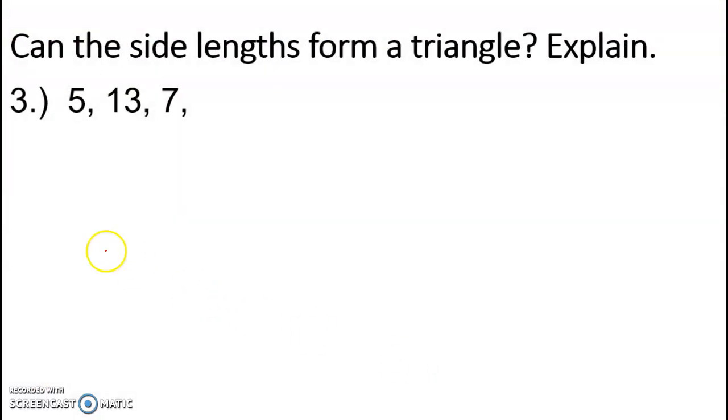Can the side lengths form a triangle? Explain. For this, we have to experiment it. Of course, we could test each one of them. We say 5 plus 13 is greater than 7, sure. But if you notice, take one of the biggest sides. It's easier to just add the two smaller ones. That checks it. So if we add two smaller ones, we take the 5 and the 7.